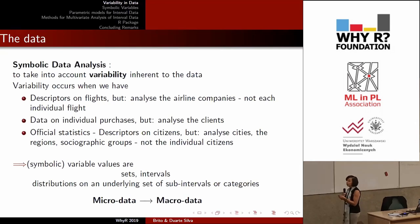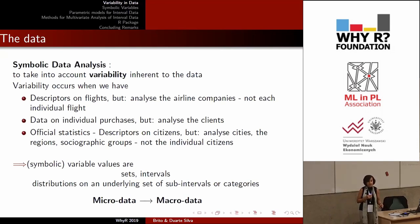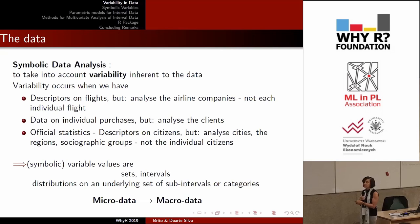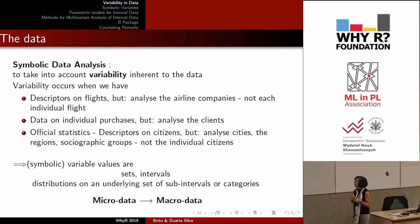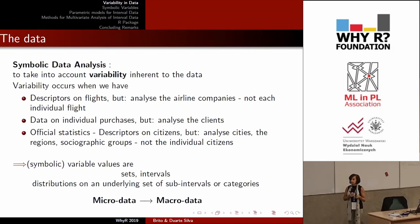In all those cases, the so-called micro data — the data recorded at the first level — must be aggregated to obtain appropriate descriptions of the units of interest at the second level: like airlines instead of individual flights, regions instead of individual citizens, clients instead of individual purchases, or hospitals instead of individual patients. To take into account the intrinsic variability, the symbolic variable values will not be one single number or category, but will be finite sets, intervals for numerical variables, or more generally distributions.